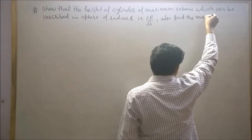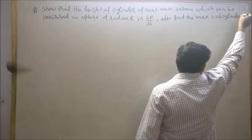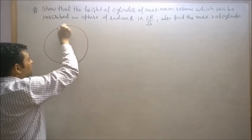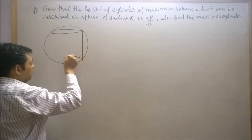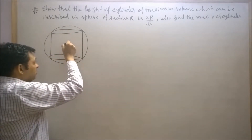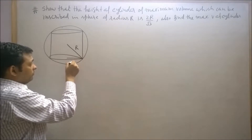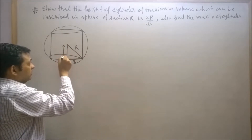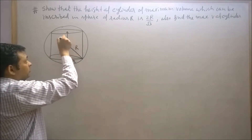Also find the maximum volume of the cylinder. Let's draw the figure for this question. The radius of the sphere in which the cylinder of maximum volume is inscribed is capital R. Let's assume the radius of the cylinder is small r, and this distance is x, so the height of the cylinder will be 2x.